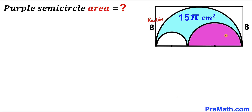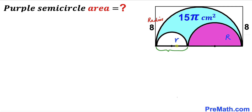Let me label the purple semicircle radius as uppercase R and the radius of the white small circle as lowercase r. We can see that uppercase R is larger than lowercase r. This is the diameter of the white semicircle, so that is 2r. Likewise, this is the diameter of the purple semicircle, so that is 2R.